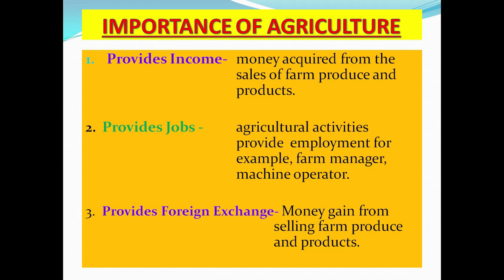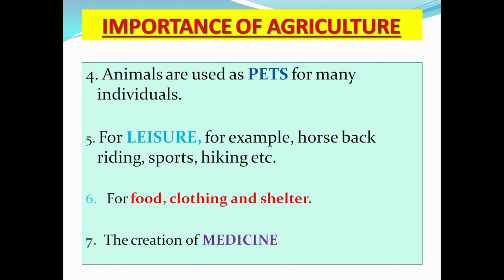Number three: agriculture provides foreign exchange — money gained from selling farm produce and products to other countries. Because foreign currency often values more than local money, sellers gain significantly from overseas markets. Number four: animals are used as pets for many individuals, such as dogs and cats. Number five: agriculture is used for leisure — for example, horse riding, sports, and hiking.